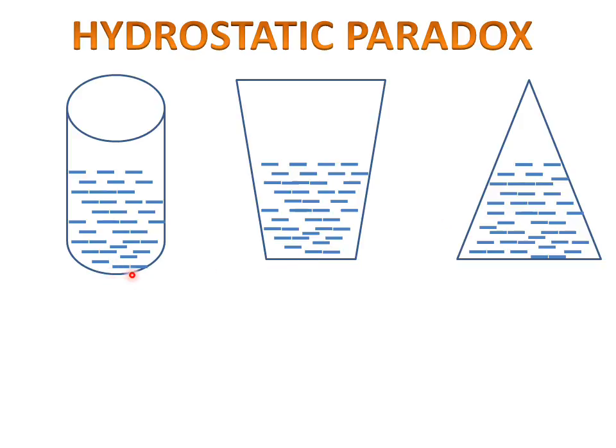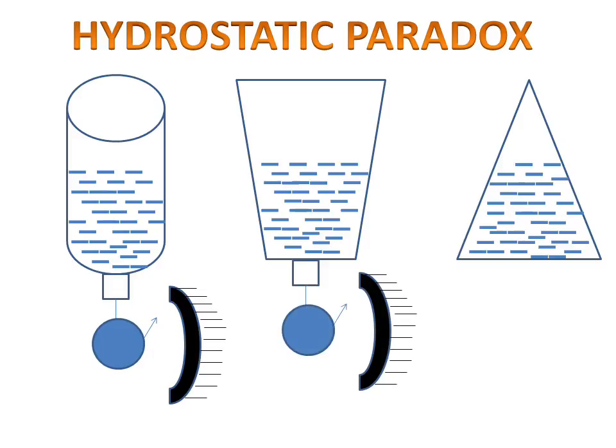A small opening, which is also equal, at the bottom of the vessels connects to a pointer and scale for measurement. The second vessel has the same opening, pointer, and scale. And the third vessel also has the same opening, pointer, and scale.